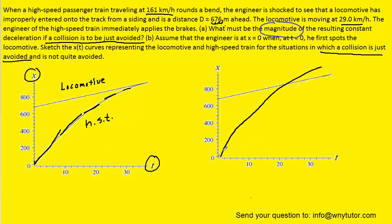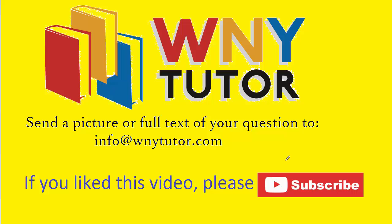If the collision was not avoided, the graph would look essentially the same except the high-speed train would have a slightly steeper slope, meaning it moves at a higher velocity, resulting in a collision. Thanks for watching. If you liked the video, please click the thumbs up and subscribe, and don't forget you can send in your own question to the email address shown on screen.